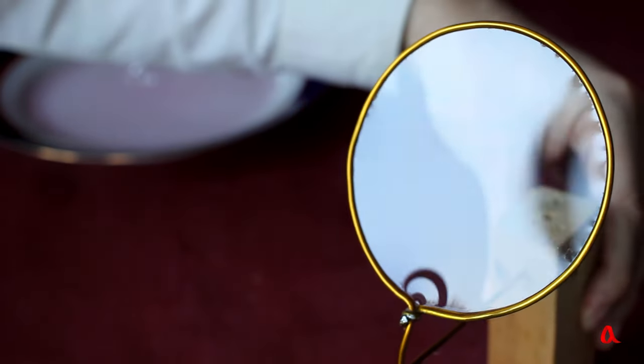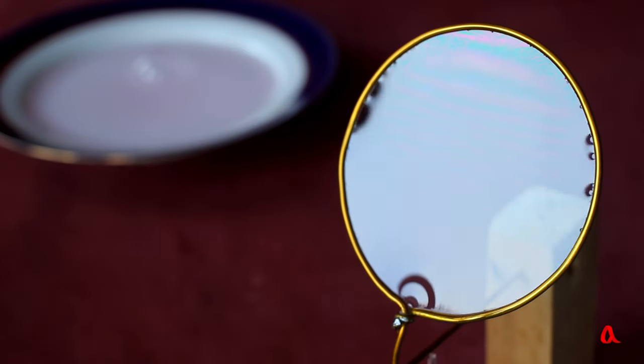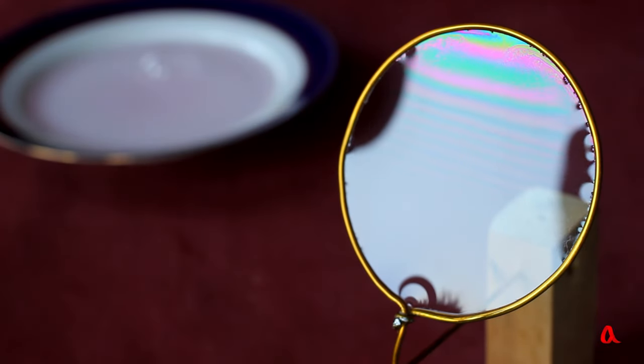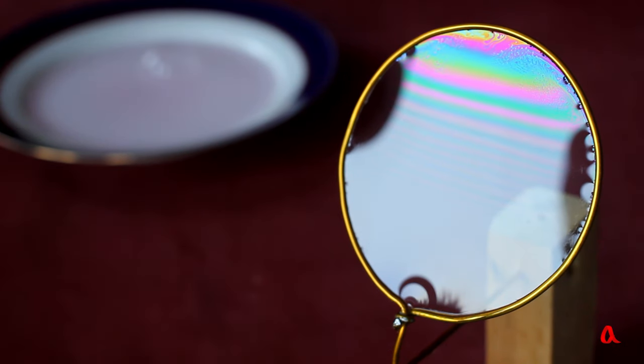We can see beautiful rainbow colors on soap film, especially if it's quite thin. Soapy liquid is moving downwards and so do the color stripes.